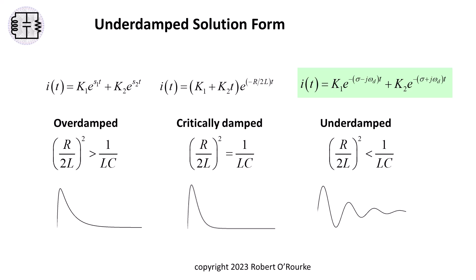In the underdamped case, the two roots S1 and S2 are complex, and variables sigma and omega d are introduced for convenience and clarity.